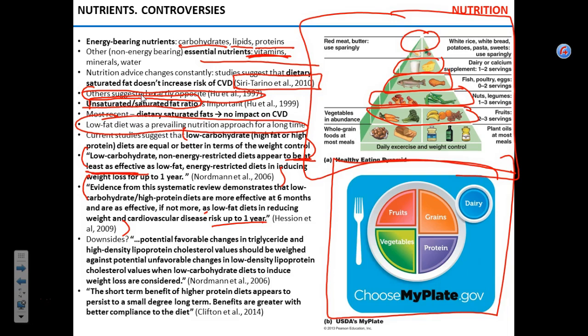Low-carbohydrate, high-protein diets are more effective at six months and equally effective at one year for reducing weight and cardiovascular disease risk. If you consume a diet rich in fat, you should monitor your blood cholesterol — not just total cholesterol, but the ratio between high-density (good) and low-density (bad) lipoproteins.